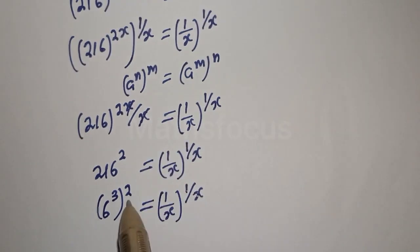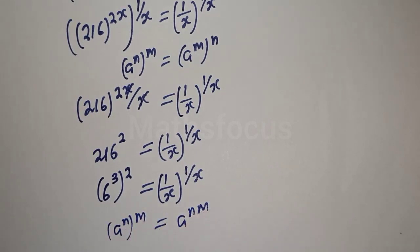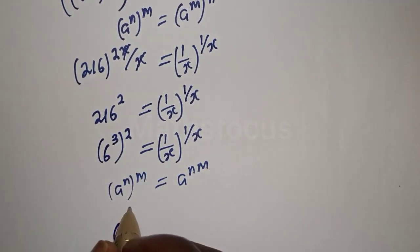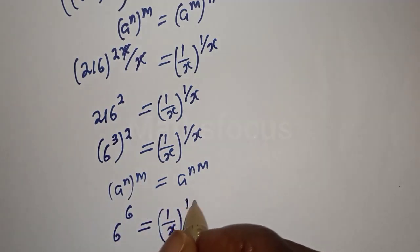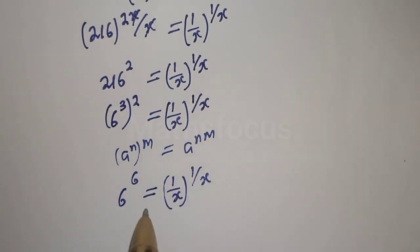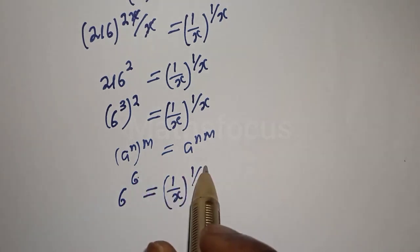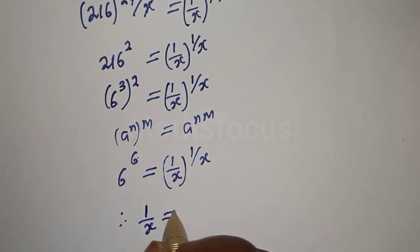Also, if you have a raised to power n to the power of m, this equals a raised to power n times m. So this can be written as 6 raised to the power 3 times 2, which is 6, is equal to 1 over x to the power of 1 over x. With this we can see that the base 1 over x is equal to 6, and the exponent 6 is equal to 1 over x. Therefore 1 over x is equal to 1 over x.